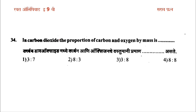In carbon dioxide, the proportion of carbon and oxygen by mass is: first option 3:7, second option 3:8. The answer to this question is option 3, which is 3:8.